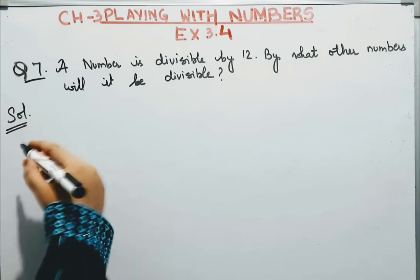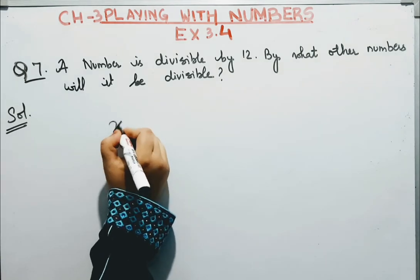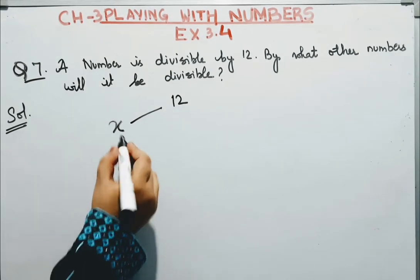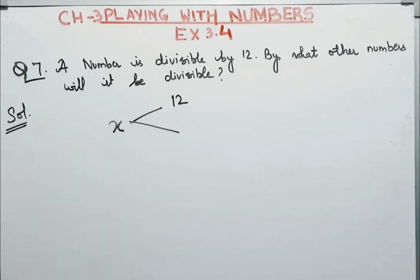Suppose that number is X. This number X is divisible by 12. What are the other numbers by which this number will be divisible?